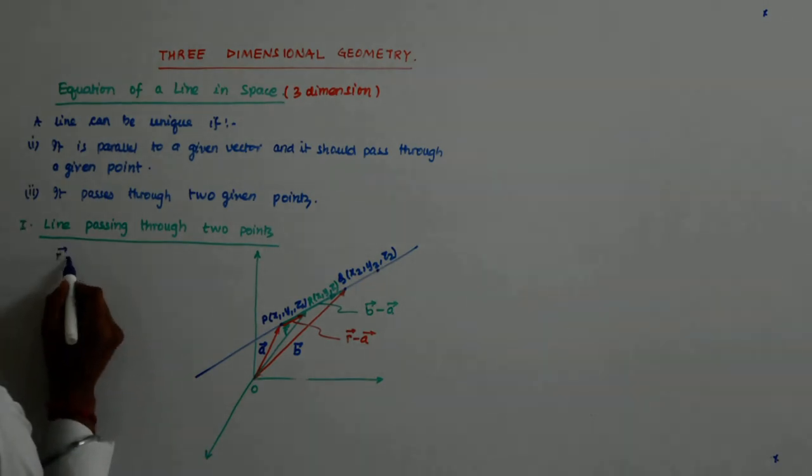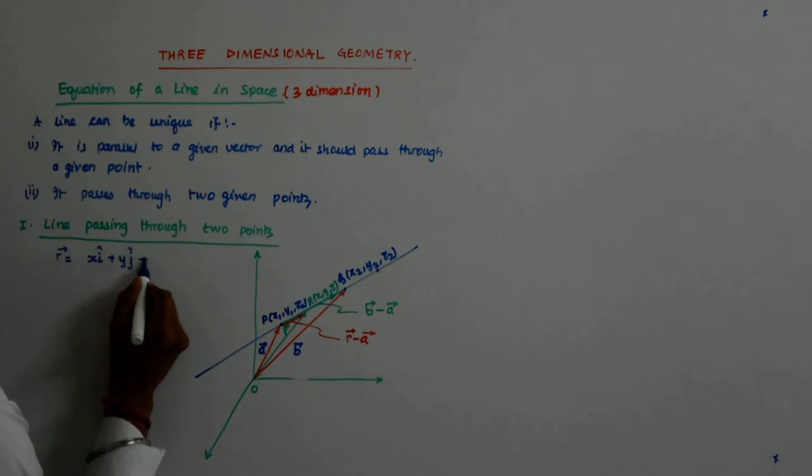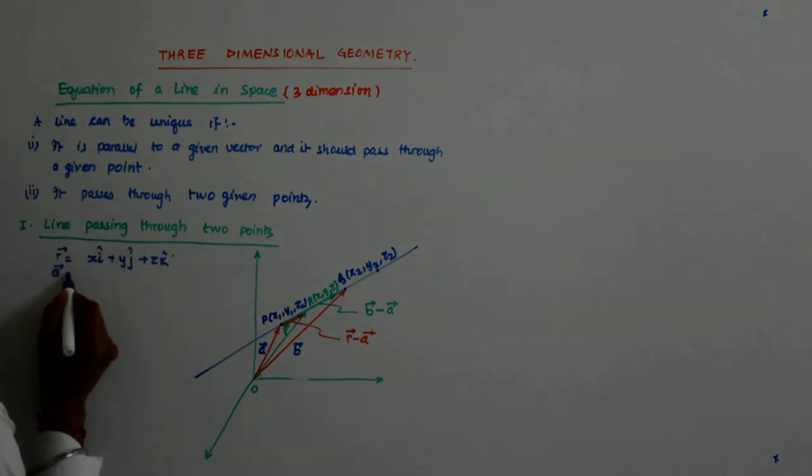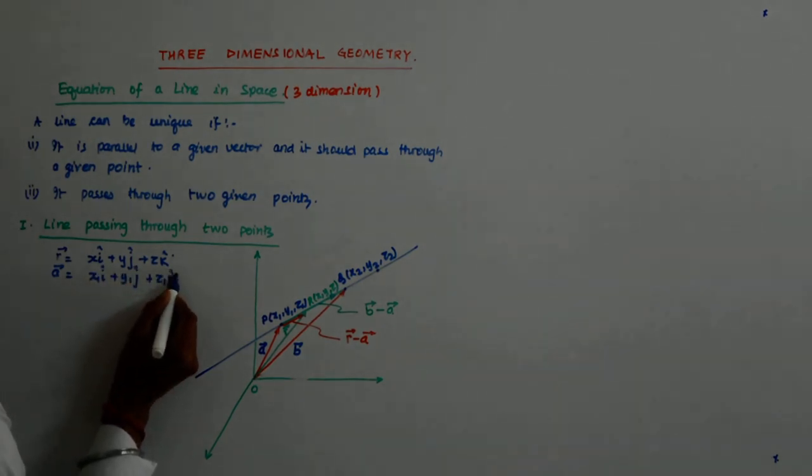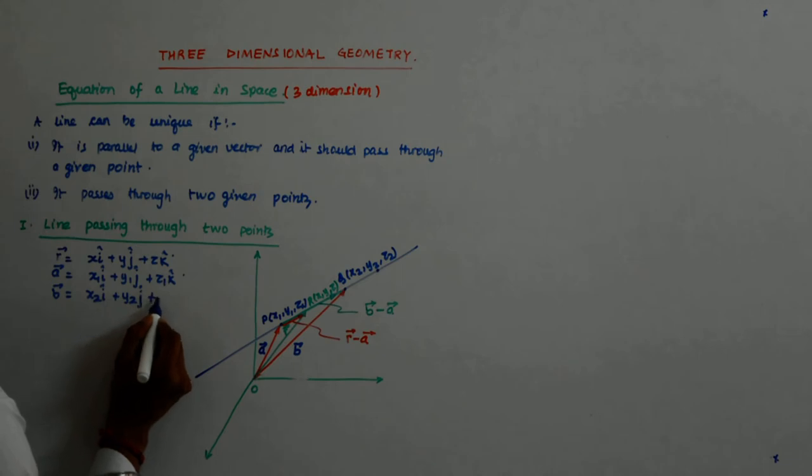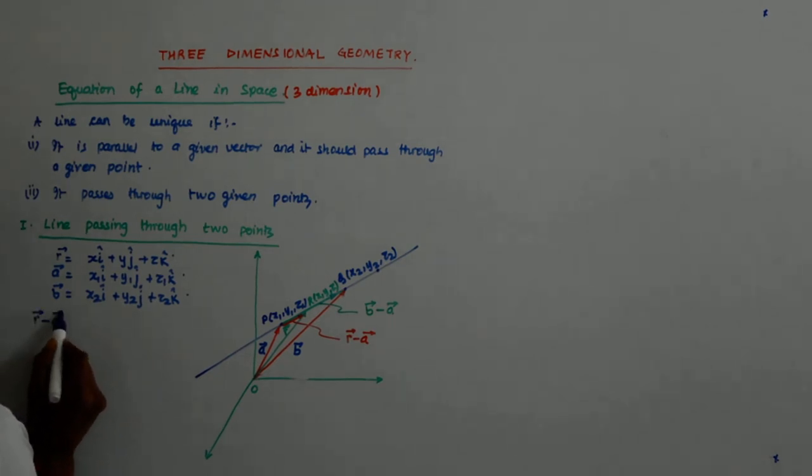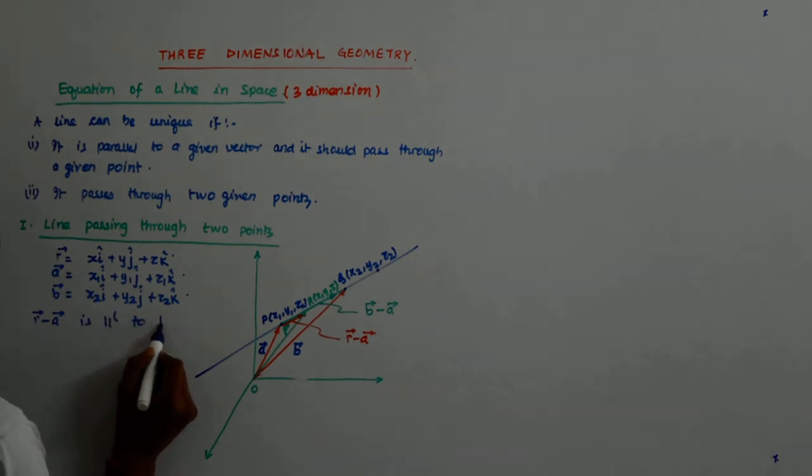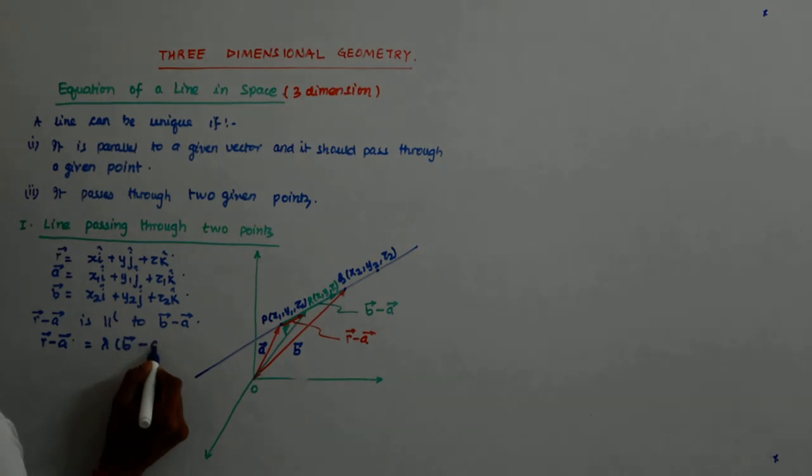So before that, what is R vector? X i cap plus y j cap plus z k cap. What is A? X1 i cap plus y1 j cap plus z1 k cap. What is B? X2 i cap plus y2 j cap plus z2 k cap. What else? Nothing else? Fine. And I know that R minus A is parallel to B minus A.